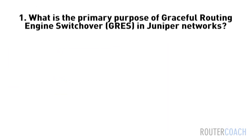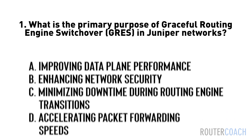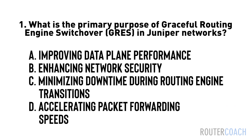Question 1: What is the primary purpose of Graceful Routing Engine Switchover (GRES) in Juniper Networks? A. Improving data plane performance. B. Enhancing network security. C. Minimizing downtime during routing engine transitions. D. Accelerating packet forwarding speeds.